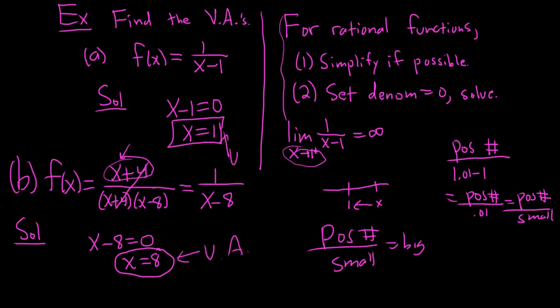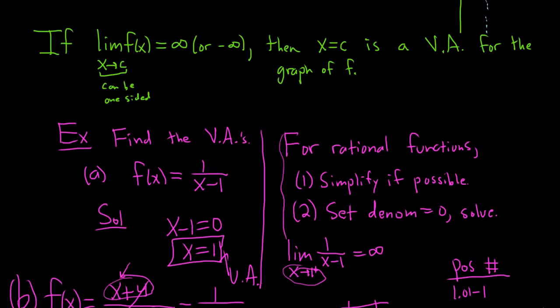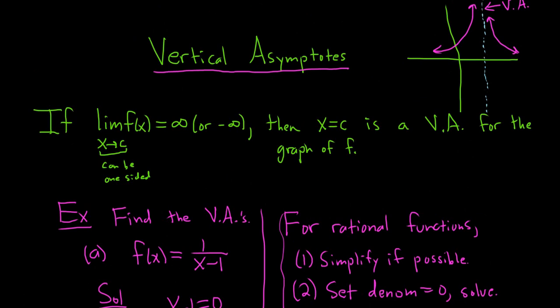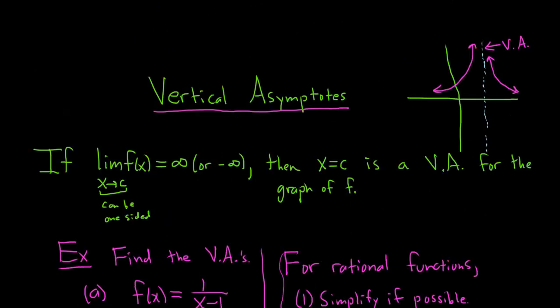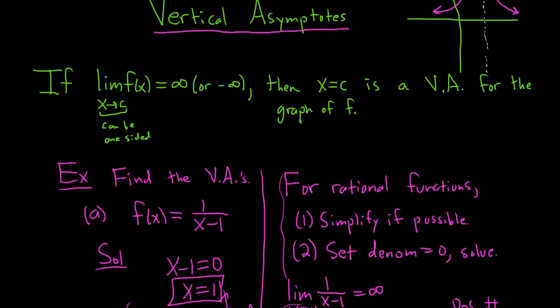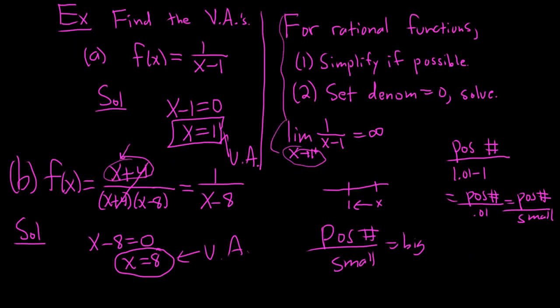Basically we use our old-school techniques to find vertical asymptotes. We don't really use the calculus, but this is calculus we're studying, so it's good to see the definition and how it applies. It's much more work to use calculus to find the vertical asymptote. I hope this video has been helpful.